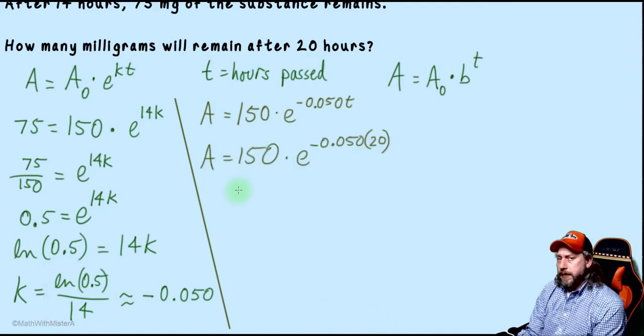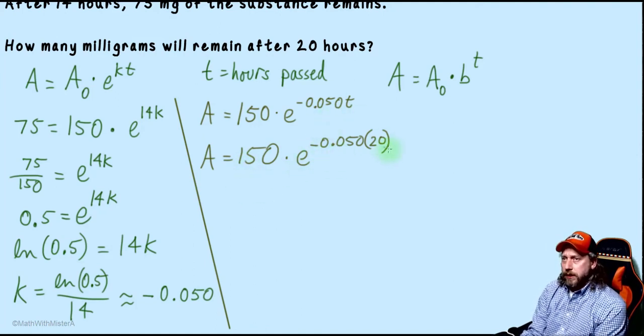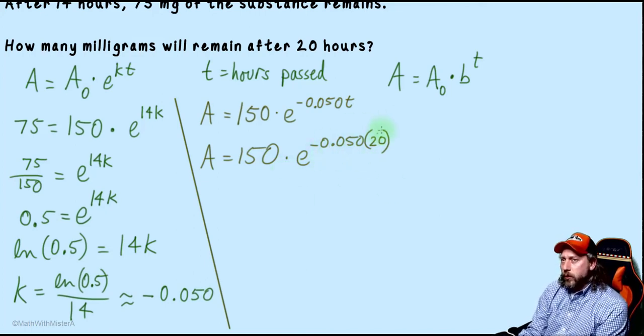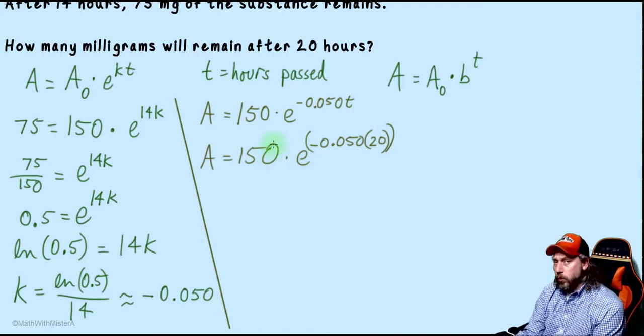To answer the question about how much of the substance is left after 20 hours, we have 20 in place of t, and now we'll evaluate this expression. If you're thinking about order of operations, we would want to do this multiplication in the exponent first, then e to that exponent, and multiply by our original amount 150 milligrams.